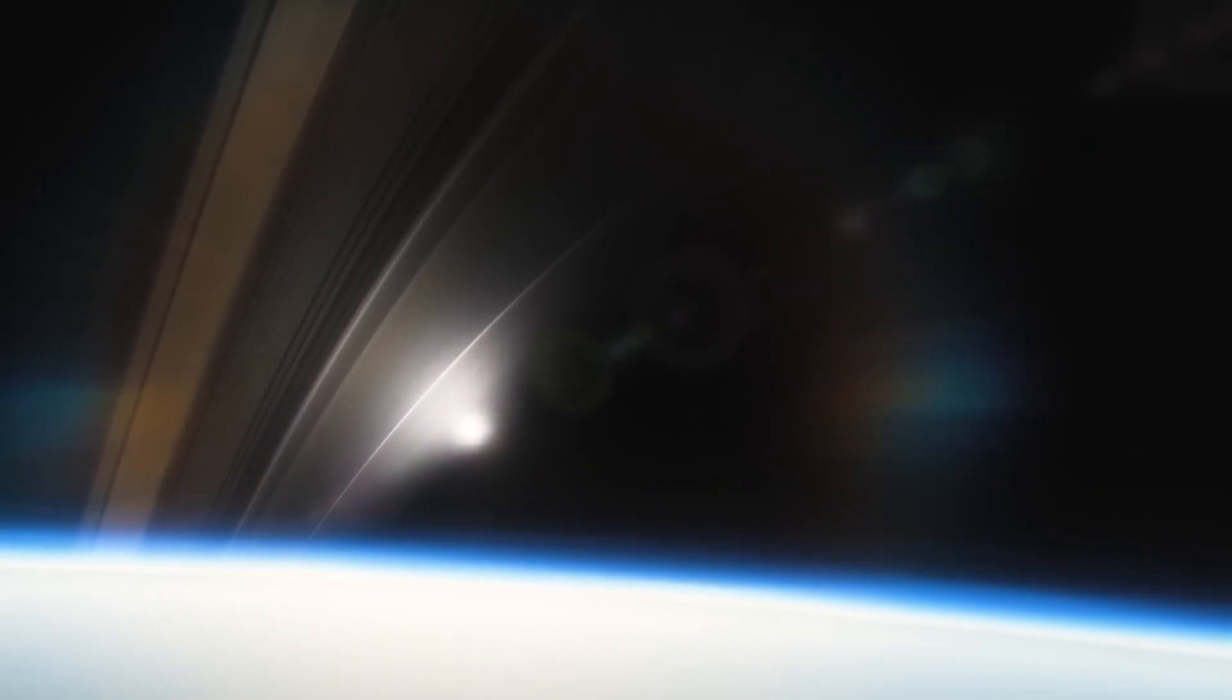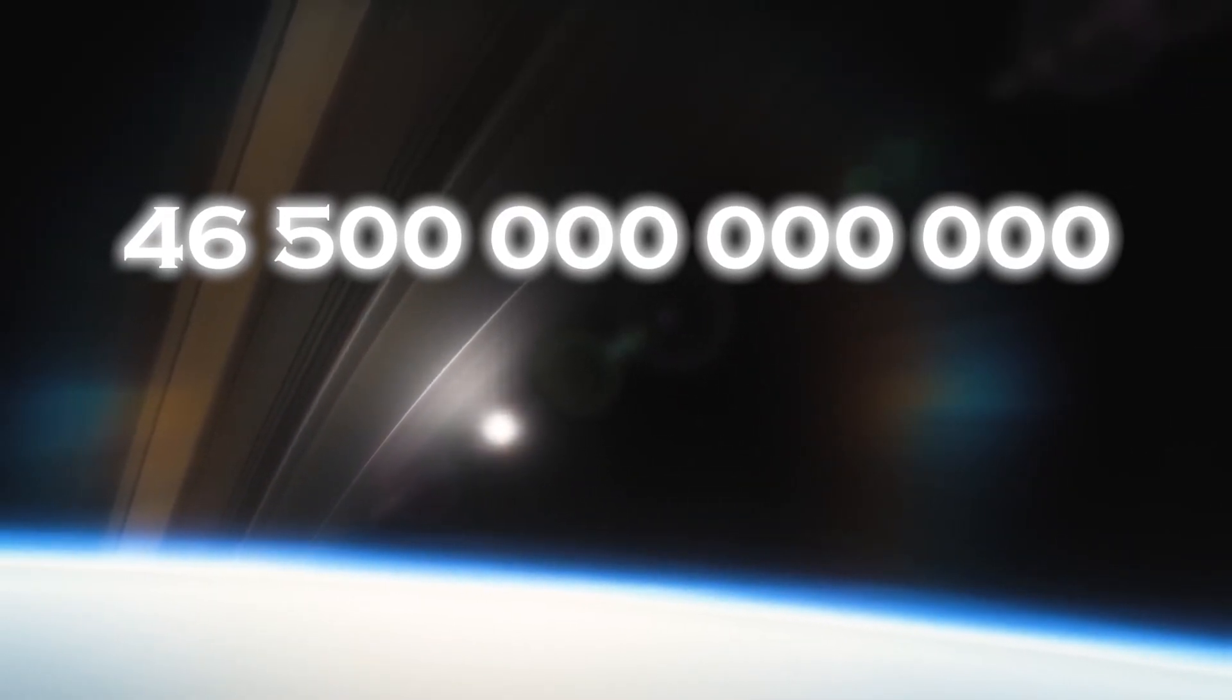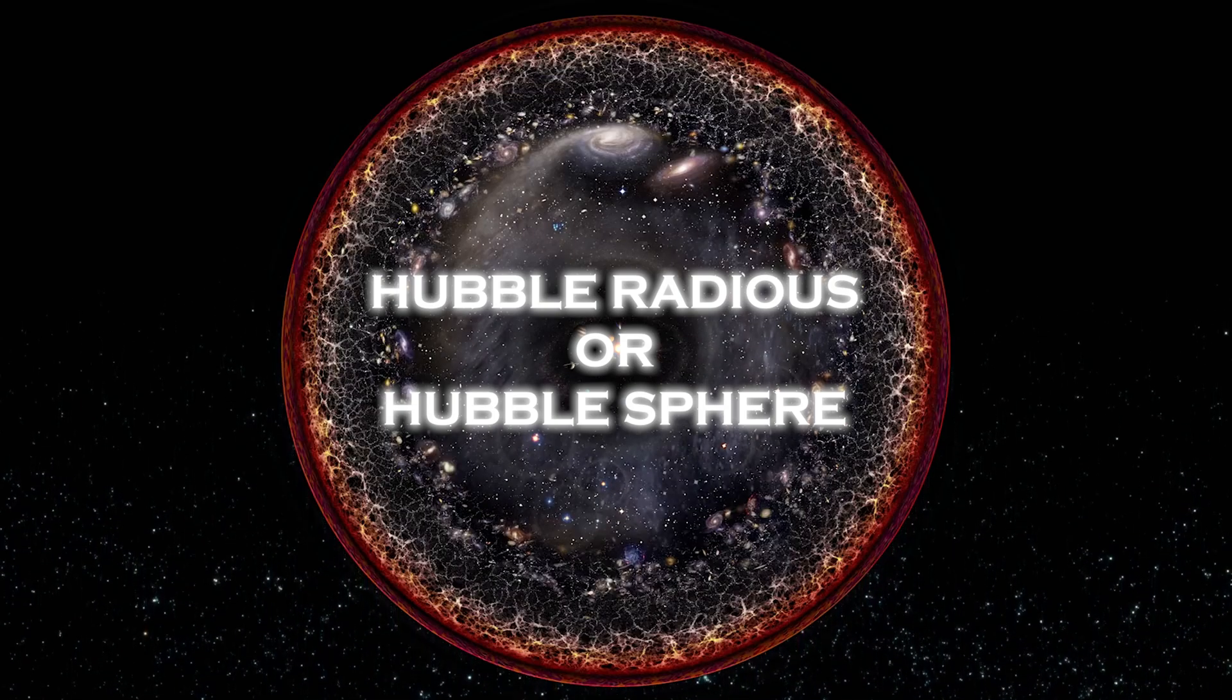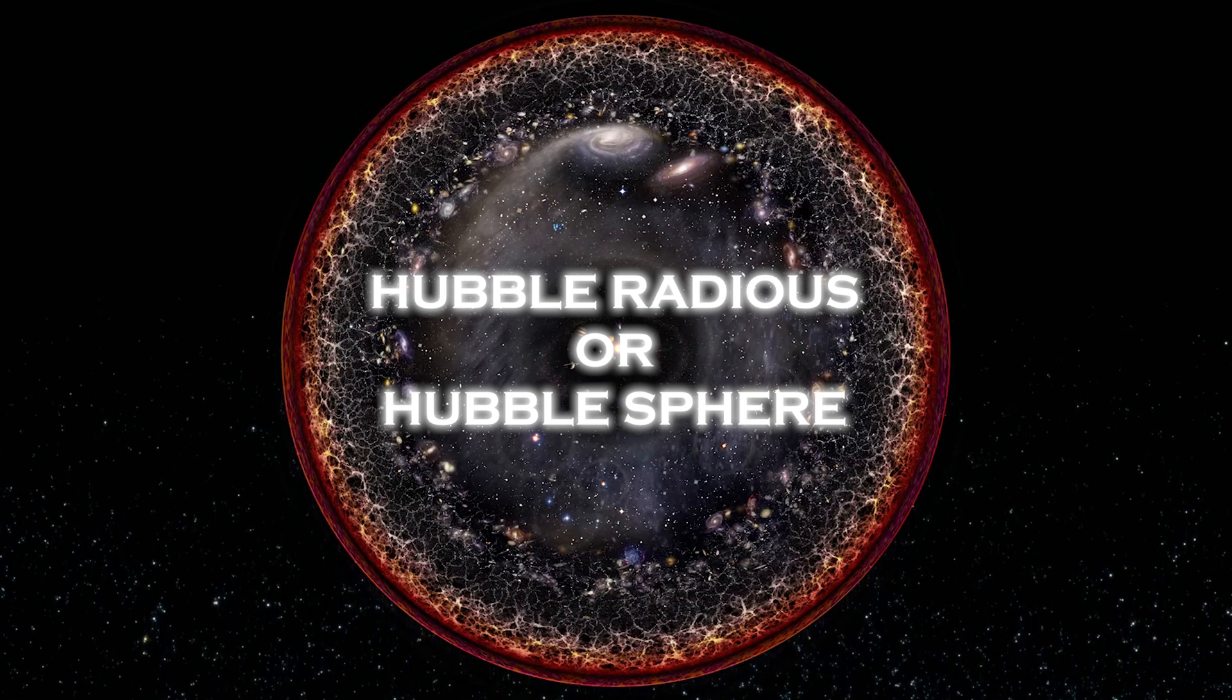Even when the Webb telescope looks as far out into space as possible, it only manages to observe a distance of about 46.5 billion light years. The radius of the universe we can observe, known as the Hubble radius or Hubble sphere, defines the limit of what we are able to see from Earth.